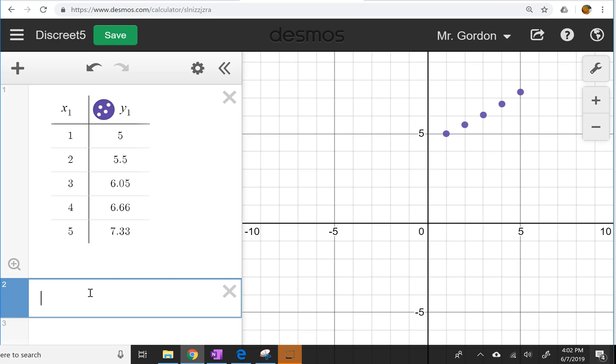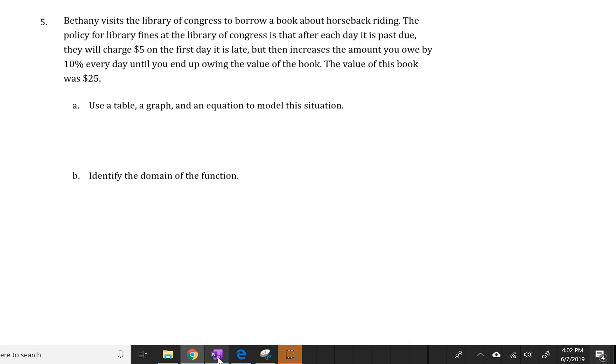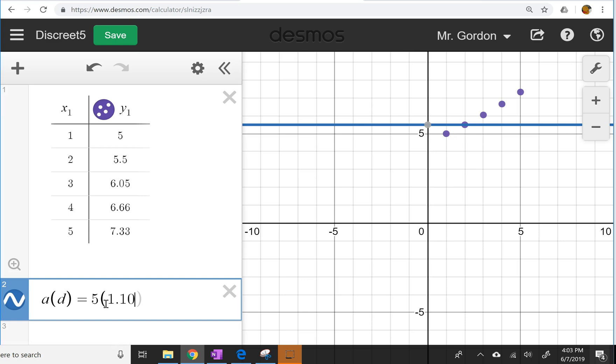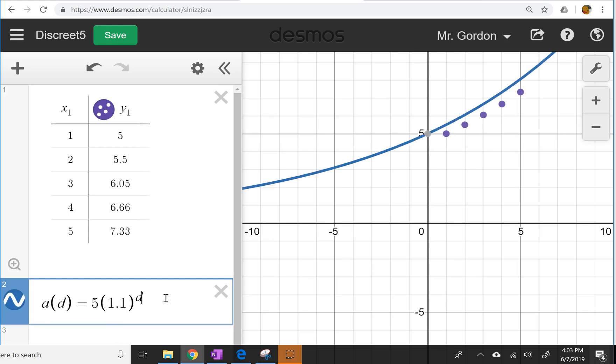So we're going to say a for the amount that she owes based on, they don't specify what variable we need to use, so let's use d for the number of days. So a of d equals, this is a geometric sequence, which means this is an exponential function, so we're going to have 5 times 1.1, you can put 1.10 if you wanted, to the d power. And notice that that's slightly off from my table of values, which I know are correct.